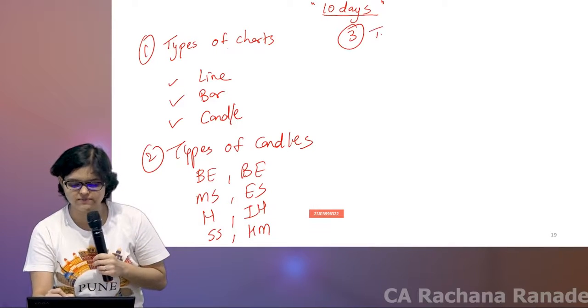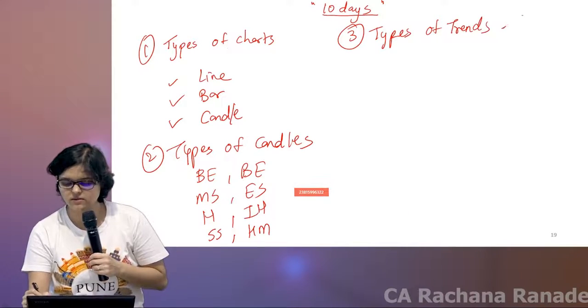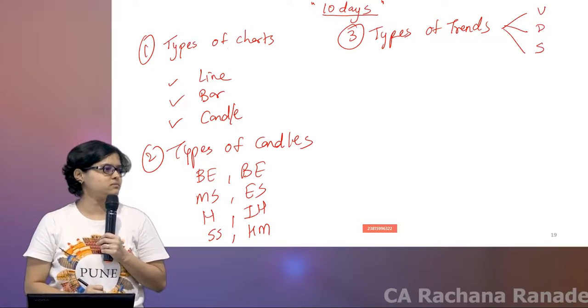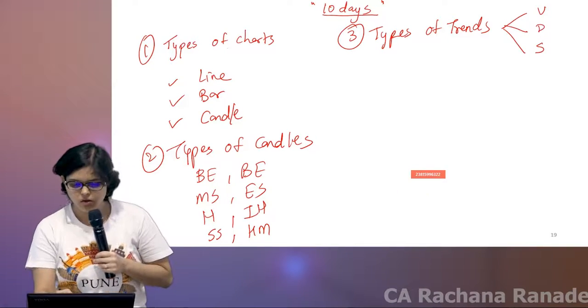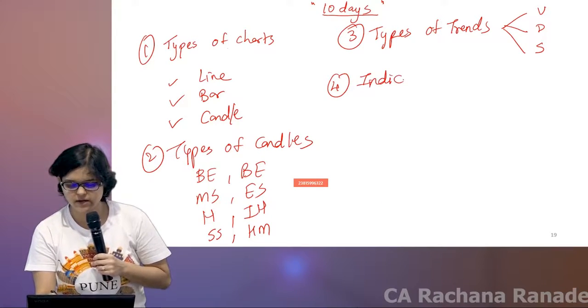Number three, we talked about what are the types of trends. Trends where in only three major trends: upward, downward, sideways. Correct.